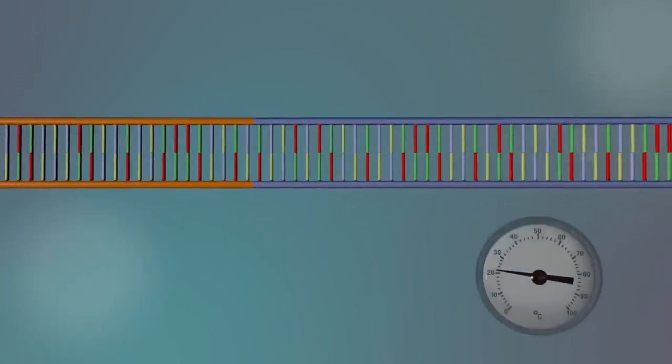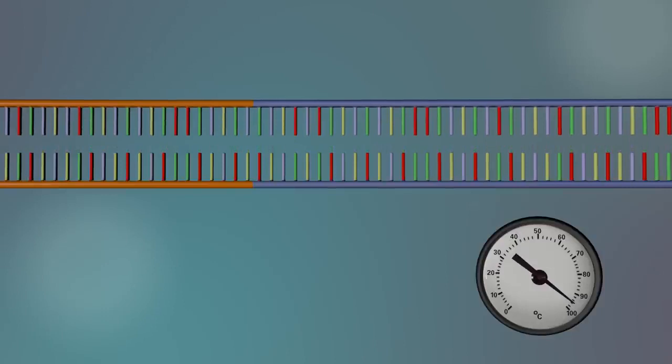To start the sequencing reaction, everything is heated to 96 degrees Celsius. This separates the DNA into two single strands.